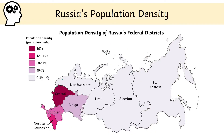This choropleth map shows the population density of each of the eight federal districts of Russia per square mile. Examine the areas with the highest population density — we would call these densely populated areas. Compare them with the areas showing the lowest population density using the key, which are described as the most sparsely populated areas of Russia.